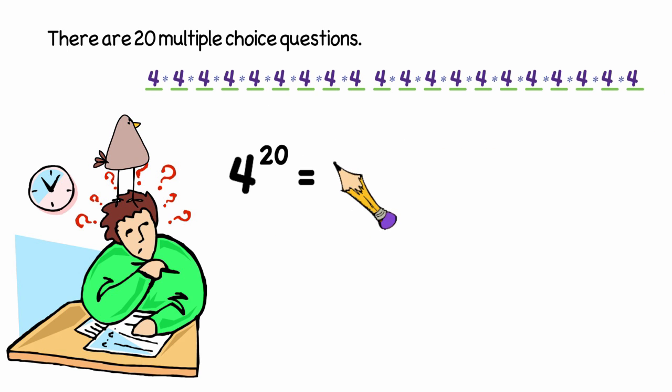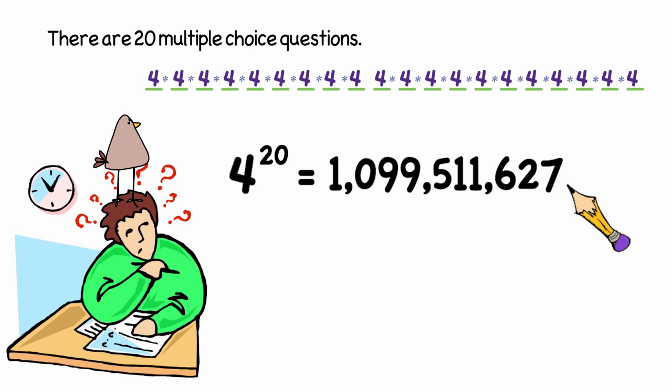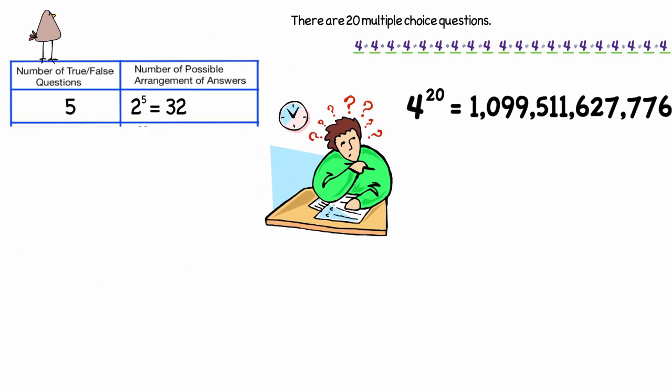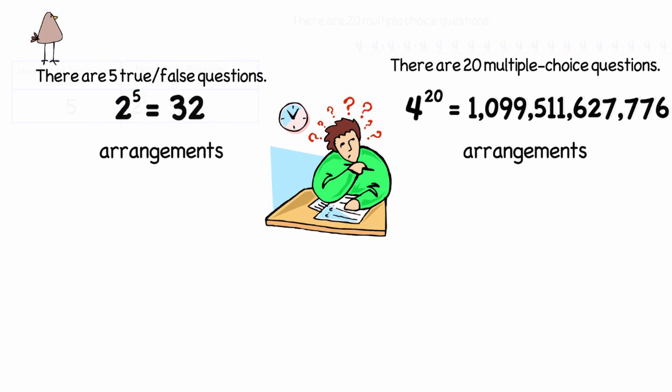If we were to multiply that out, we'd get 1,099,511,627,776. So what would be the chance that I would get a perfect test?